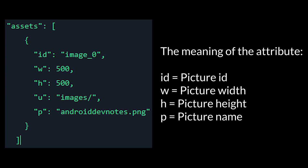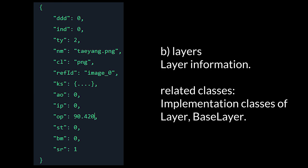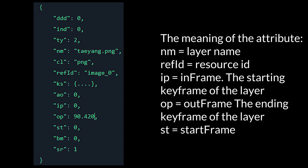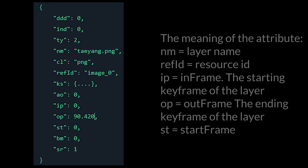The meaning of the asset attributes: ID — Picture ID; W — Picture Width; H — Picture Height; P — Picture Name. Under Layers (Layer Information), the related classes are the implementation classes of Layer and BaseLayer. The meaning of the layer attributes: NM — Layer Name; REF — Source ID; IP — InFrame, the starting keyframe of the layer; ON — OutFrame, the end keyframe of the layer; ST — Start Frame.